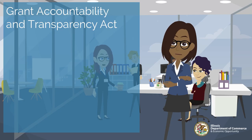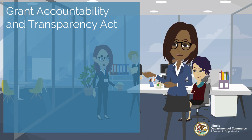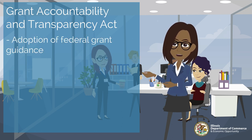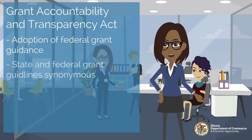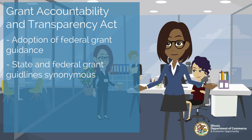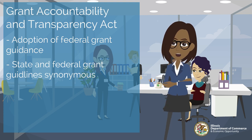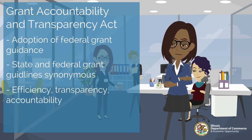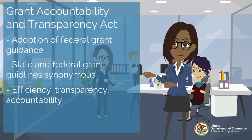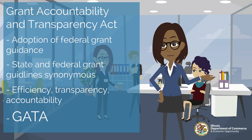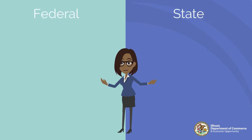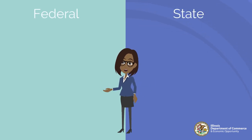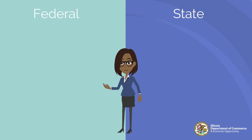The State of Illinois implemented the Grant Accountability and Transparency Act through the adoption of the federal grant guidance and regulations found in 2CFR 200, making state and federal grant guidelines synonymous. The adoption of these regulations helps provide a more efficient, transparent, and accountable state grant process. The Grant Accountability and Transparency Act is most commonly referred to as GATA. Since state regulations mirror federal, to help avoid confusion, the words federal and state can be viewed as interchangeable in 2CFR 200.